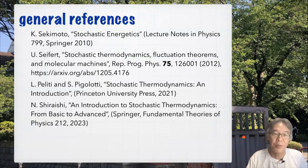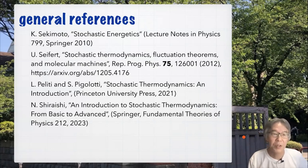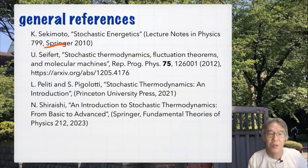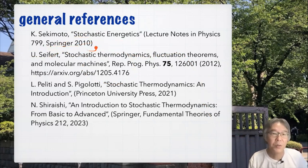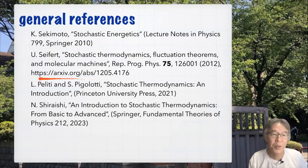I'm going to present an incomplete list of references at the end of each part of the main lecture. Here are some general references, mainly books. Ken Sekimoto is one of the pioneers of non-equilibrium statistical mechanics for small systems and has a nice book from 2010. Udo Seifert's review is very famous, and it's not a book so you can read it for free on the arXiv.